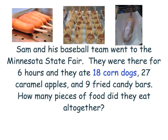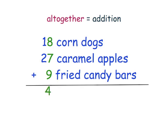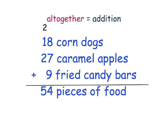The next step is to figure out what we are adding. It looks like we have 18 corn dogs, 27 caramel apples, and 9 fried candy bars. Now that we know what we are adding together, we can create our problem: 18 plus 27 plus 9. The next step is to add the numbers in the ones column, which are 8 plus 7 plus 9. That equals 24, so I put the 4 in the ones column and carry the 2 to the tens column. Now we add the tens column: 2 plus 1 plus 2 equals 5. So Sam and his team ate 54 pieces of food.